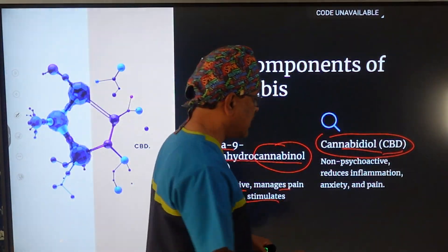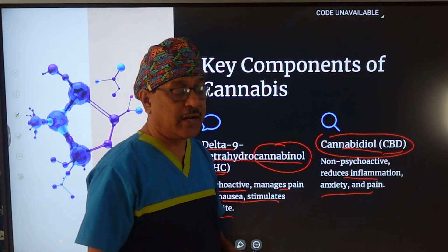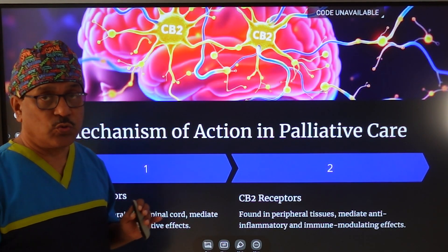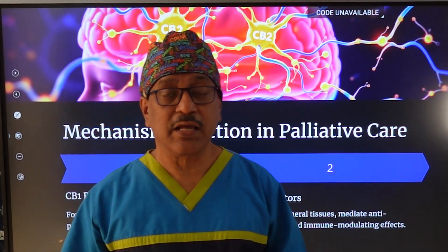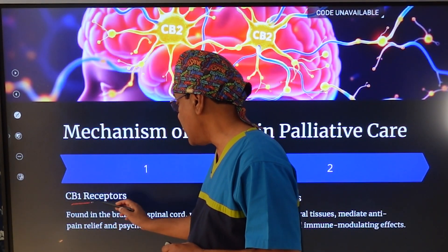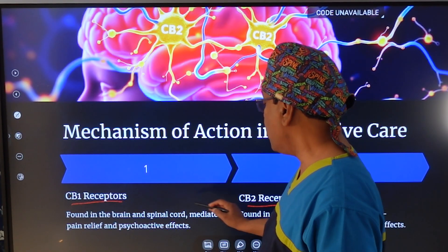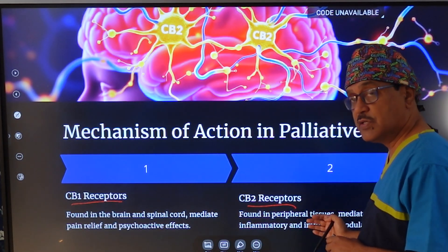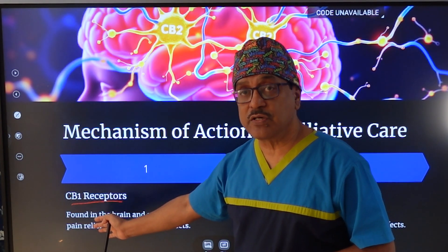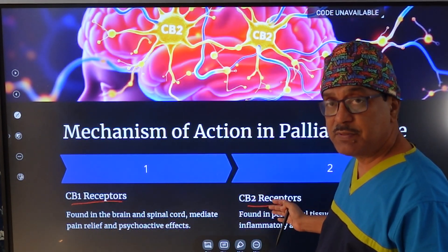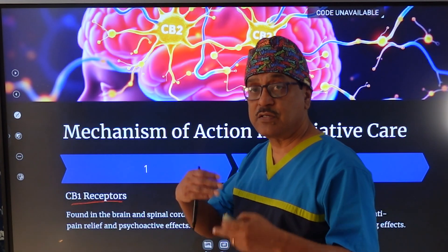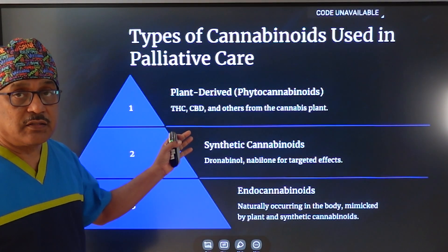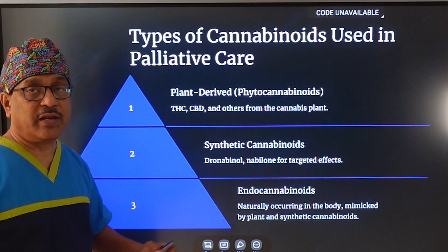CBD works mostly in the peripheral system — it reduces inflammation, anxiety, and pain. In our body, just like opioid receptors, we have cannabinoid receptors known as CB1 and CB2. CB1 is found mostly in the brain and spinal cord, and CB2 is mostly found in the periphery. THC binds mostly with CB1 and CB2 but also has action on other receptors.